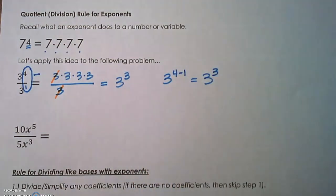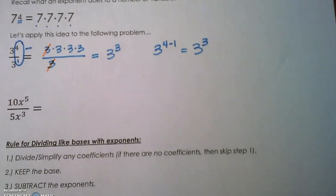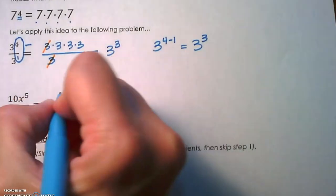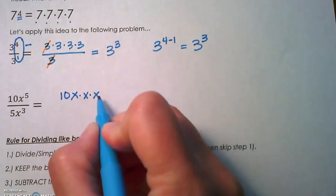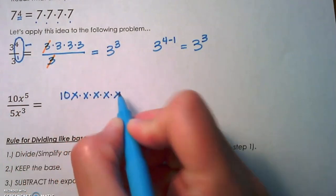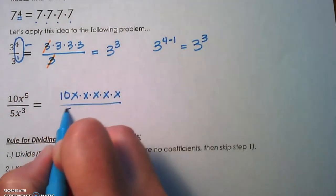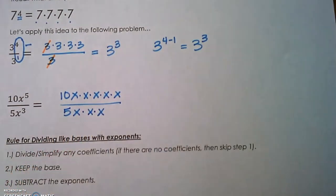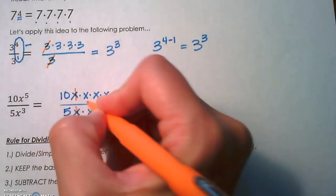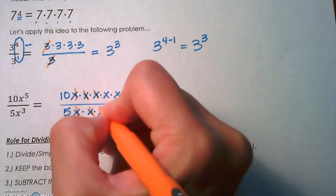Let's do the same thing with our problem that has coefficients. We're going to write that out as 10x to the fifth—that's 10 times x used as a factor five times—divided by 5x to the third, which is 5 times x used as a factor three times. Let's cancel out those common factors. Let's start with the x's. We have one x here, we cancel out another one, we have a third one that we can cancel out.